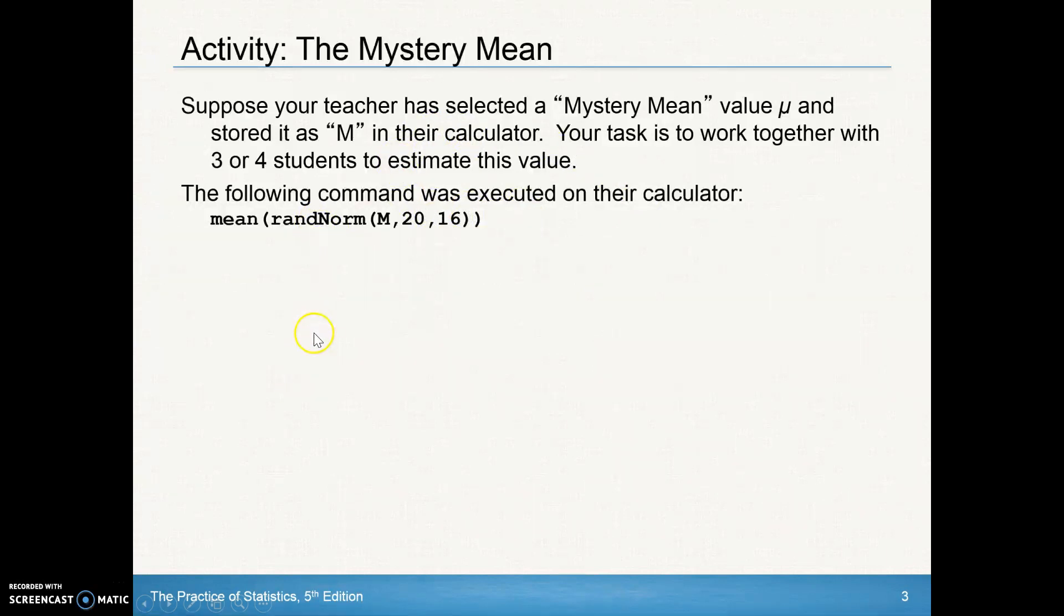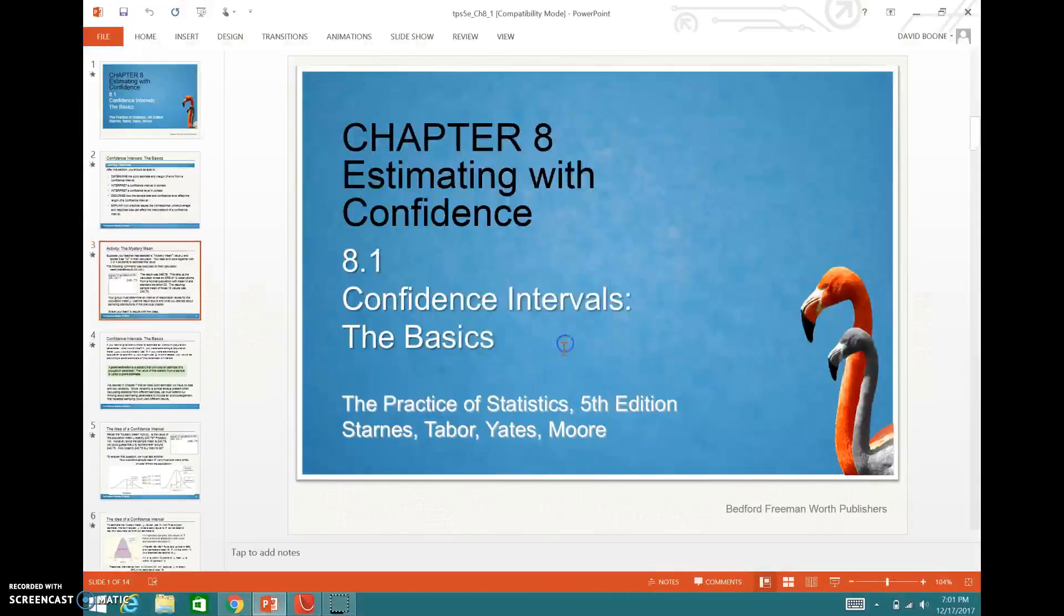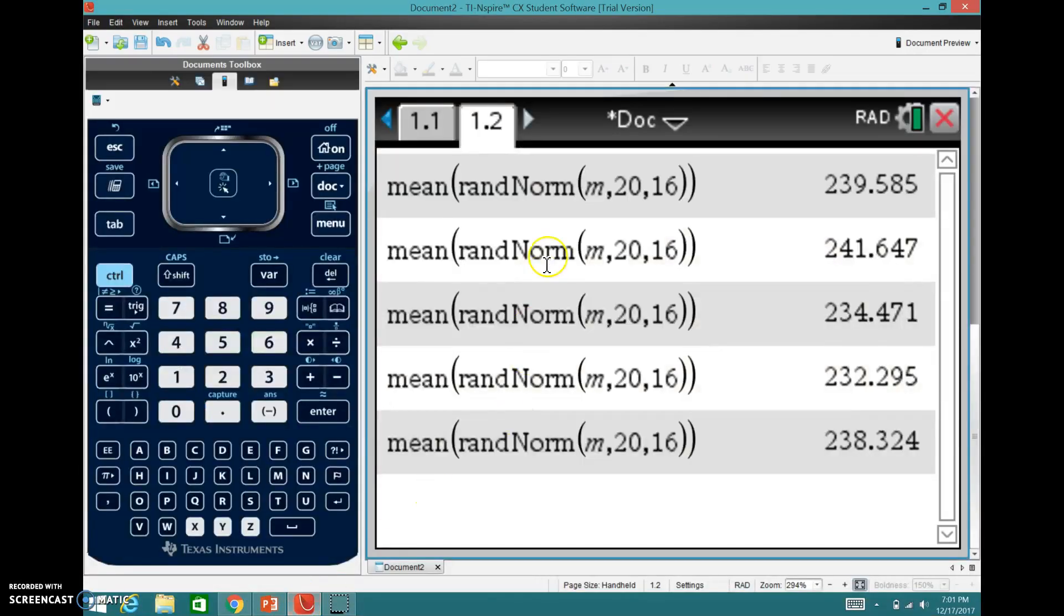So I'll put the following command on my calculator. We'll see a screenshot here in just a second. You can see that's what I've done here, and I've done it several times. So what this means is I'm getting from a random normal distribution. I've selected an M value. You don't know what that is. This is the standard deviation, and this is the sample size.